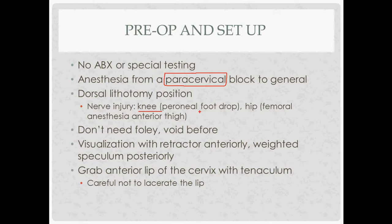If the hip is too abducted or too flexed, that could cause injury to the femoral nerve — specifically the femoral cutaneous nerve, causing anesthesia to the anterior thigh. You don't need a Foley; you can use a straight catheter or have the patient void before the procedure. To visualize the cervix, you can use a speculum or an anterior retractor and a weighted posterior speculum. Then grab the anterior lip of the cervix with the tenaculum, being careful not to lacerate the lip.